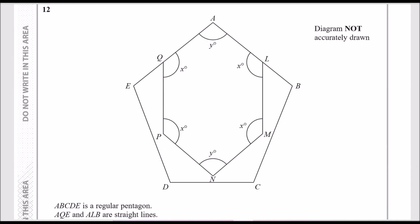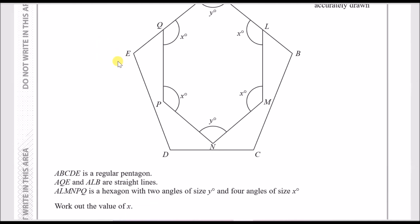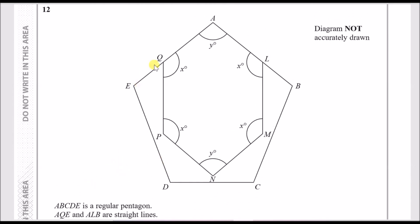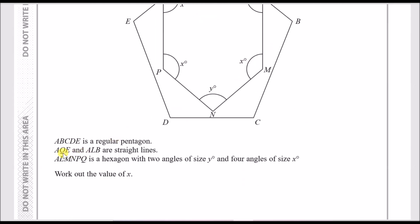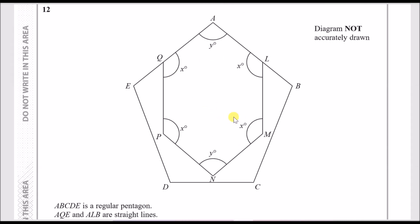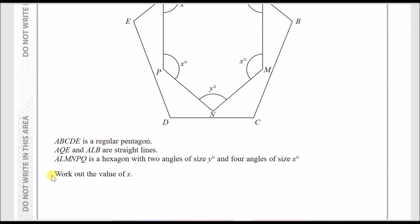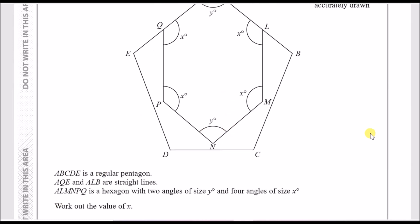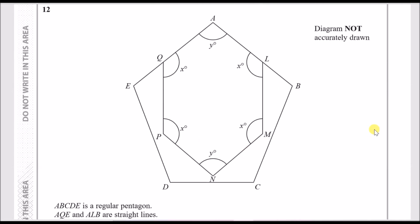Let's begin part three. Number 12: we have a big pentagon, and it says that AQE and ALB are straight lines. The inside part, A L M N P Q, is a hexagon with two angles of size y and four angles of size x. We need to work out the value of x.